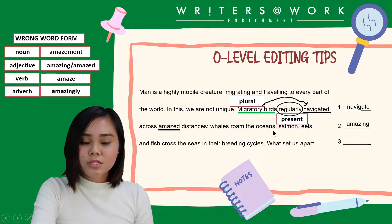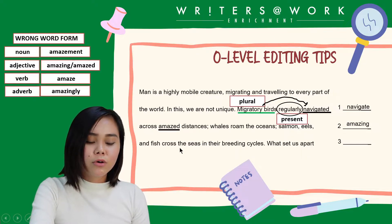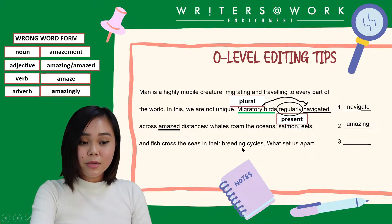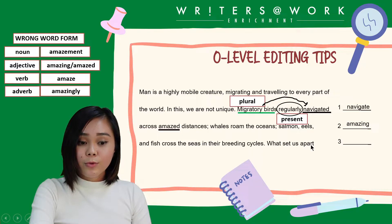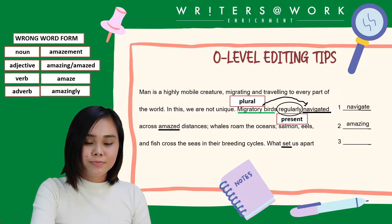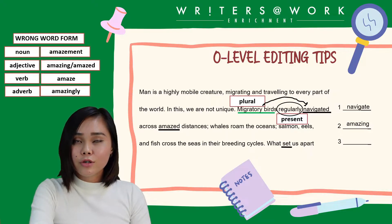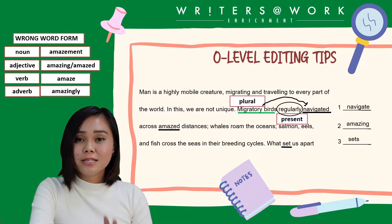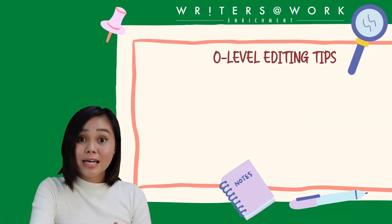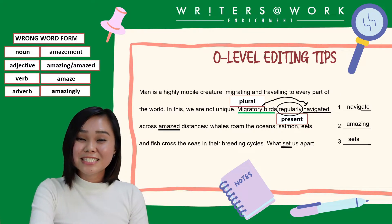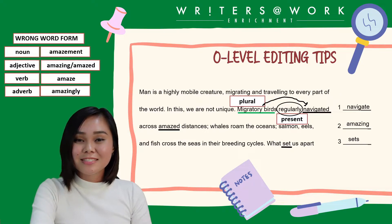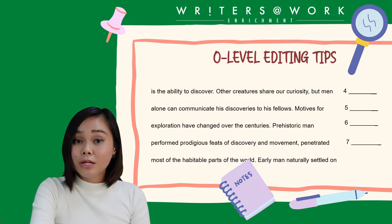Whales roam the ocean; salmon, eels, and fish cross the seas in their breeding cycles. This sentence is correct. However, the error in number three is: 'What set us apart?' The wrong word is 'set' — it should be 'sets'. 'What set us apart is the ability to discover.' We're talking about something singular, so it should be 'What sets us apart is the ability to discover.'